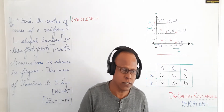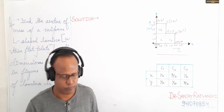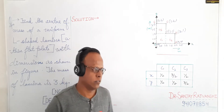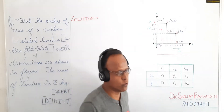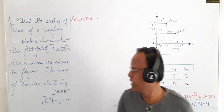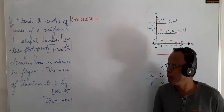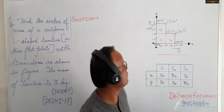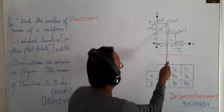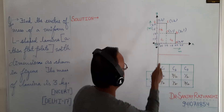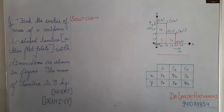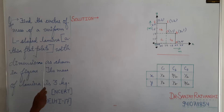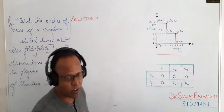Please read the question: Find the center of mass of a uniform L-shaped lamina with dimensions as shown in the figure. You have to calculate the center of mass of a uniform L-shaped lamina. This given is your figure — this is the L-shaped lamina. What is the meaning of lamina? Lamina means a thin flat plate.